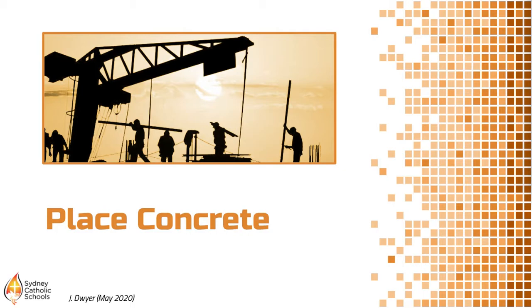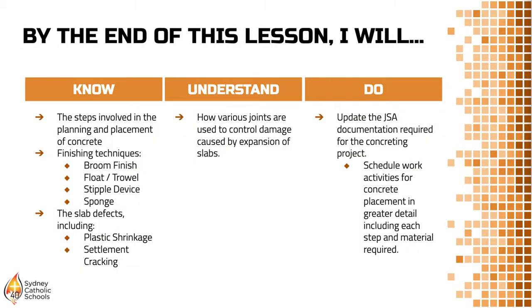Alright, here we go. Looking at placing concrete today. This lesson is obviously the theory associated with placing concrete — we're not placing the concrete during the video, but you're going to know the steps we go through for the planning and placement. You're going to learn a little bit about finishing techniques and some of the defects caused during the process of the slab being placed. We're also going to talk about control joints, and I hope you understand how joints are used to control the damage that can be caused to concrete slabs and the buildings around them.